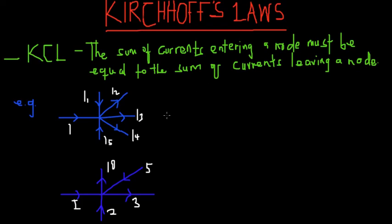In case you don't know what a node is, I'll brief you now — but you can also go back to our playlist on applied electricity and skim through the video to understand what nodes and loops are. A node is the point where current leaves or enters a circuit. The current law states that the sum of currents entering a node must be equal to the sum of currents leaving the node. So current I and current I1 are entering this node, while I2, I3, and I4 are leaving.